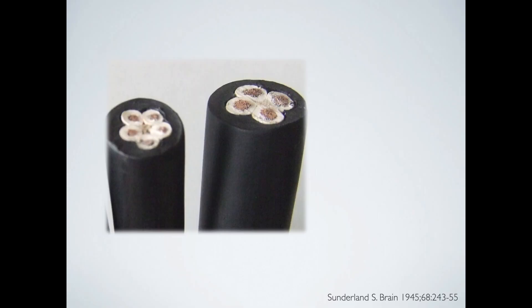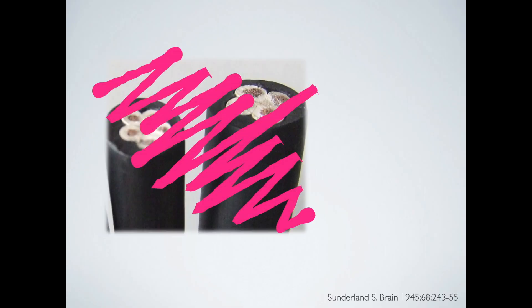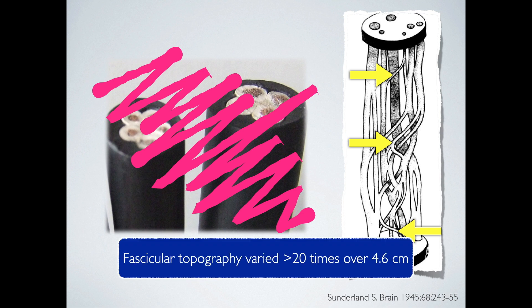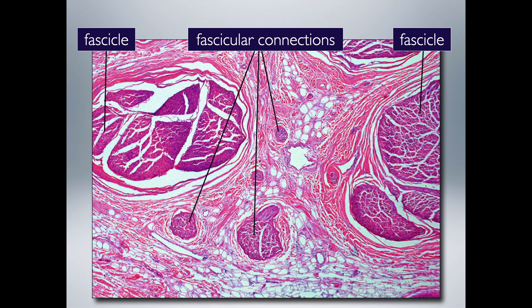It's important to understand that fascicles don't travel down nerves like wire in a cable. The great Australian anatomist Sidney Sunderland demonstrated that fascicles break apart and recombine many times over the course of their journey, and the fascicular topography varies substantially even over a few centimeters. Importantly, there are multiple fine connections between fascicles that we probably can't see with ultrasound, so when we think we see a nerve cluster with three fascicles, that's not the whole picture by a long shot. This macrograph shows two large fascicles with fine fascicular connections which are almost certainly not visible on ultrasound.